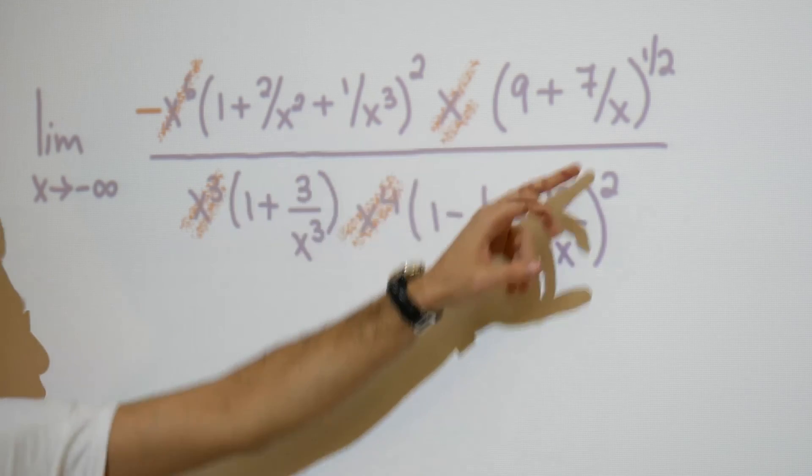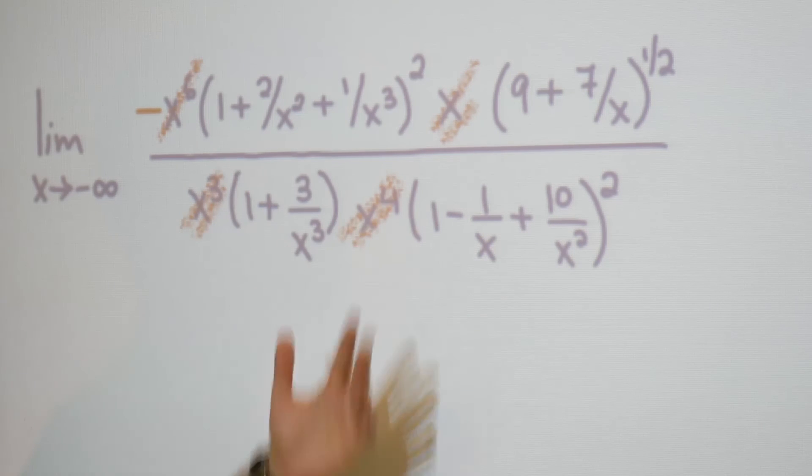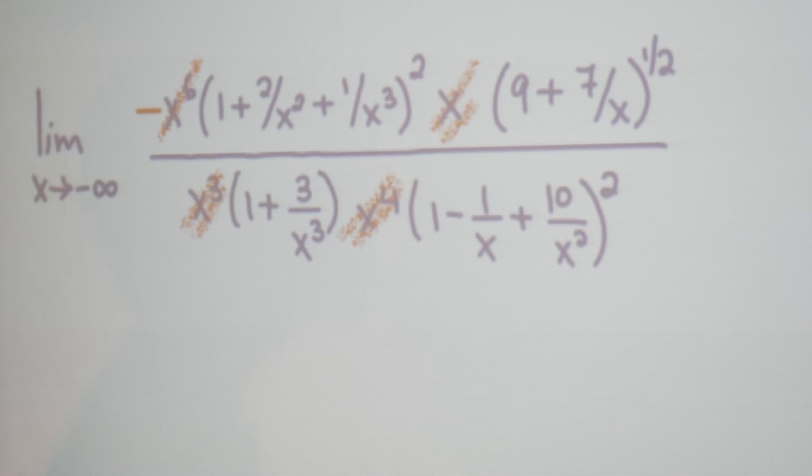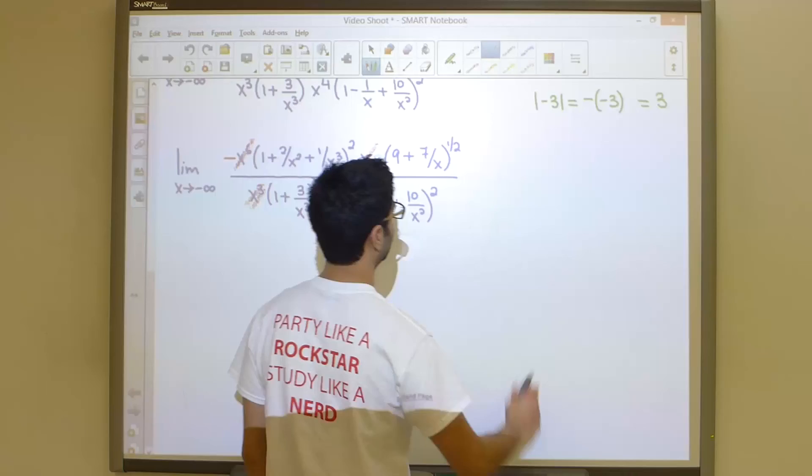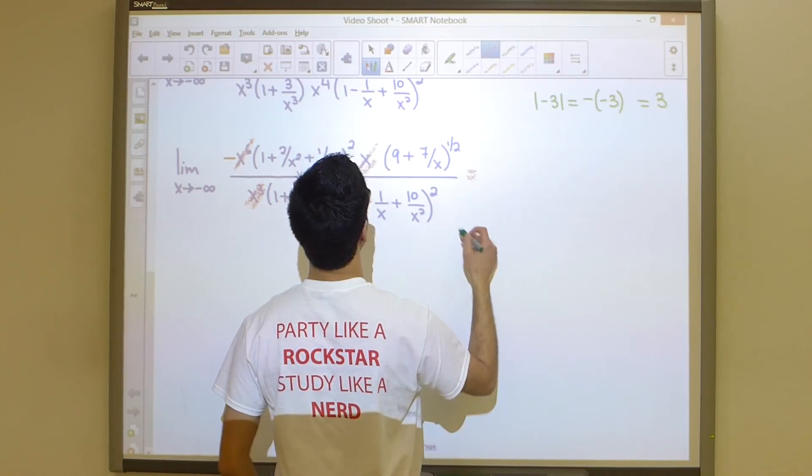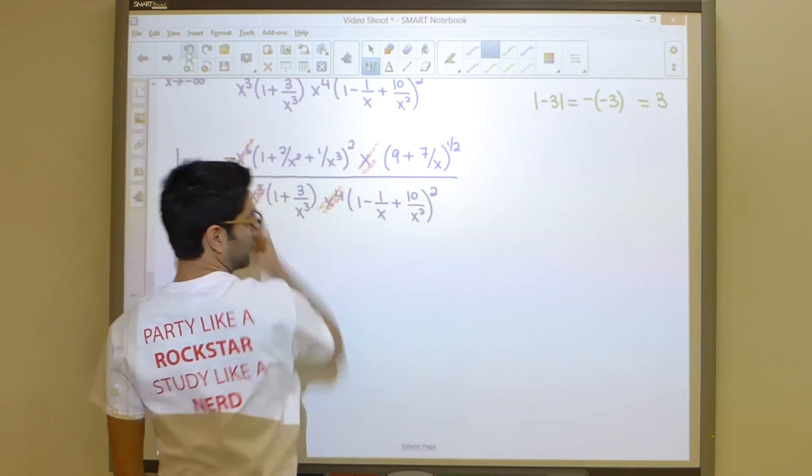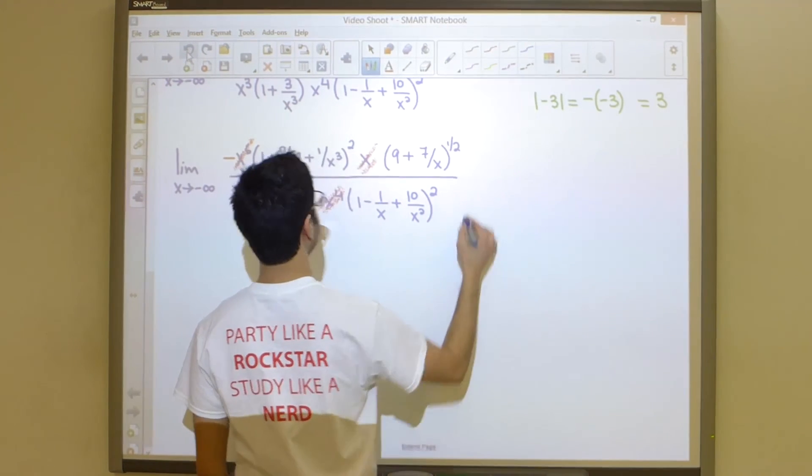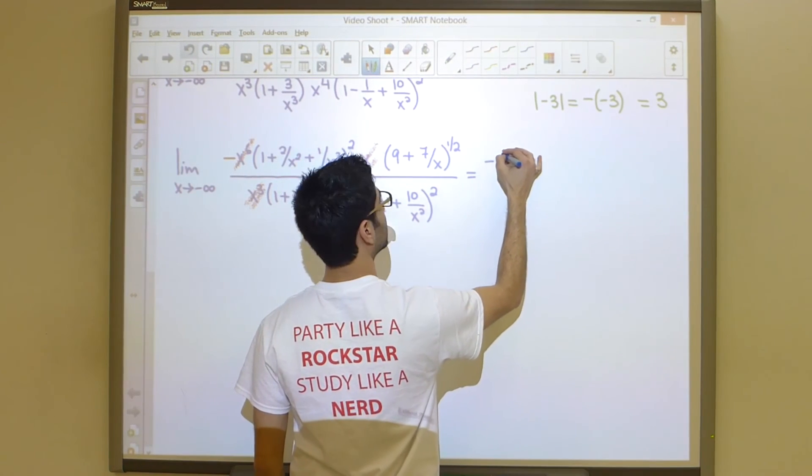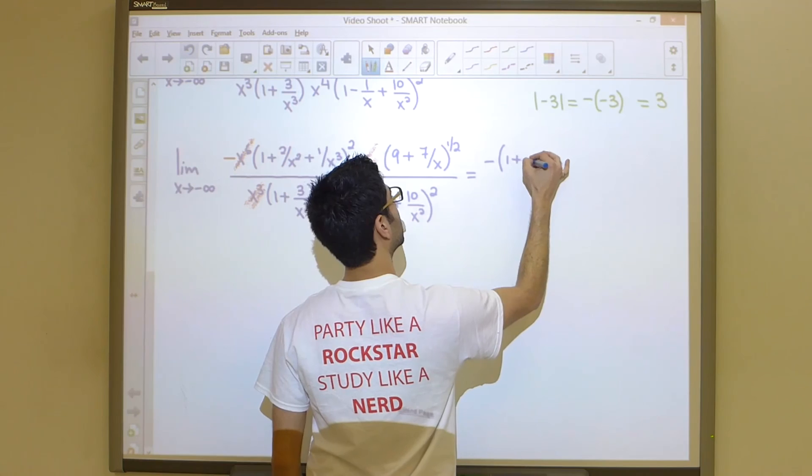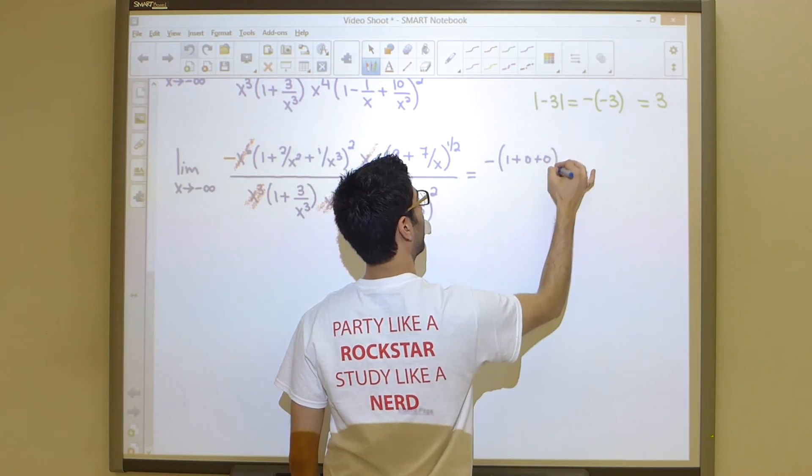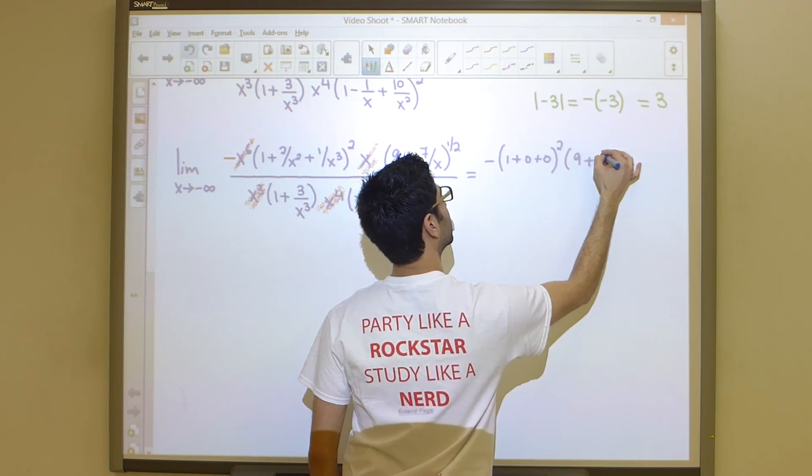Now if I was to take negative infinity and plug it in everywhere I see x, I will notice that a number divided by infinity gives us zero over and over and over. So all of these terms where x happens to be in the denominator will simply go to zero. And like I said earlier, our answer will reveal itself.